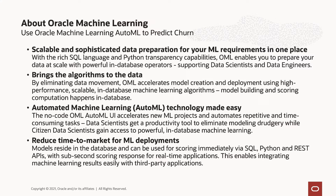The algorithms are distributed and running in parallel, and they can build and score in parallel very fast. The automated machine learning, or AutoML technology, is also included, and this allows you to have a tool that helps you choose the best model for the problem at hand. So citizens data scientists can gain access to these powerful algorithms. And finally, OML reduces time to market for ML deployments, because we can do scoring through SQL, through Python, REST APIs, with sub-second scoring responses for real-time applications, enabling easy integration with machine learning results for third-party applications.